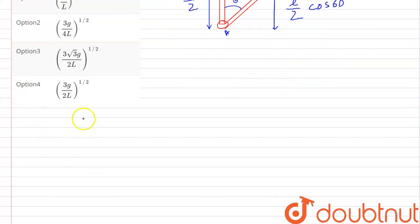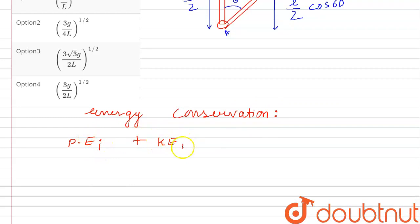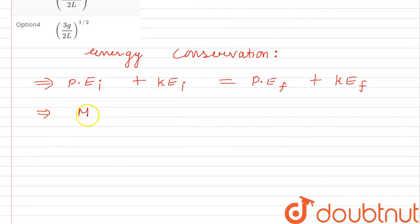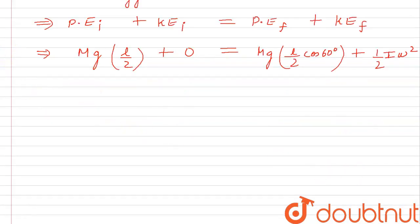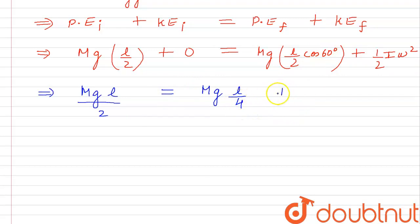We will apply energy conservation here. Initial potential energy plus initial kinetic energy equals final potential energy plus final kinetic energy. So: initial potential energy Mg × (L/2), kinetic energy initial is 0. Final potential energy is Mg × (L/2) × cos 60°, plus final kinetic energy which is ½Iω².